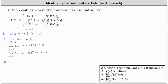Finally, step three, we need to check that the limit of f(x) as x approaches zero equals f(0). From step two, the limit equals 3, and from step one, f(0) equals 3. All three conditions have been satisfied, which indicates the function is continuous at x equals zero.